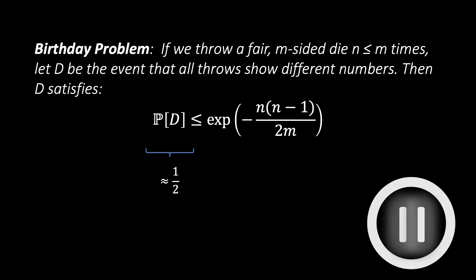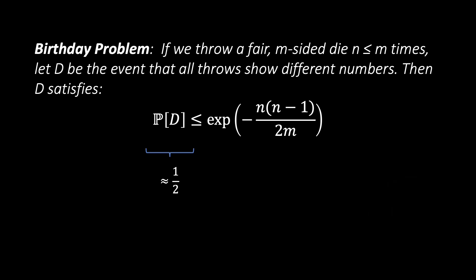If we want our probability of getting a collision to be approximately one-half, the exponent on the right side of the equation should be a constant. That means, M should be roughly the square of N. In other words, if we want a hash function to be collision-free, we need the hash table to be quadratic in the size of the number of keys that we want to store.